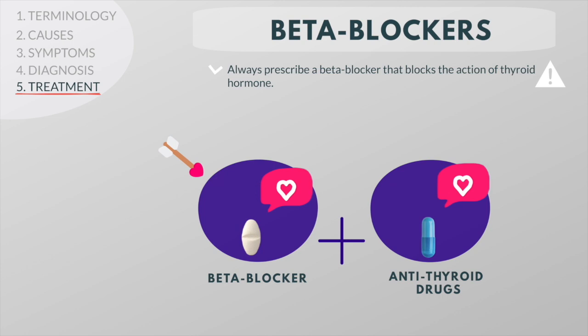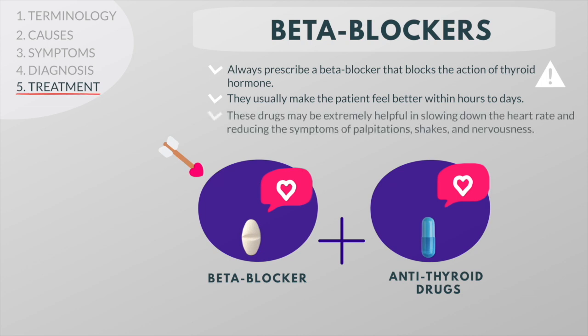No matter which of these three methods of treatment is used for hyperthyroidism, always prescribe a beta-blocker that blocks the action of thyroid hormone. They usually make the patient feel better within hours to days, even though they do not change the high levels of thyroid hormone in the blood. These drugs may be extremely helpful in slowing down the heart rate and reducing the symptoms of palpitations, shakes and nervousness until one of the other forms of treatment has a chance to take effect.